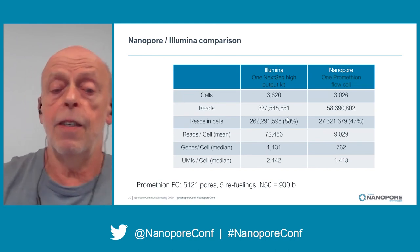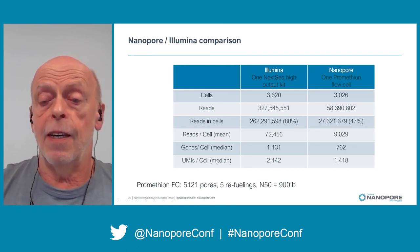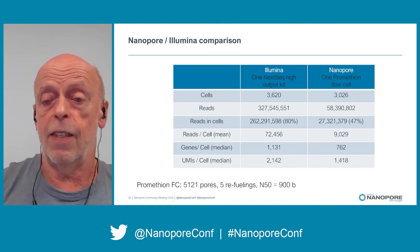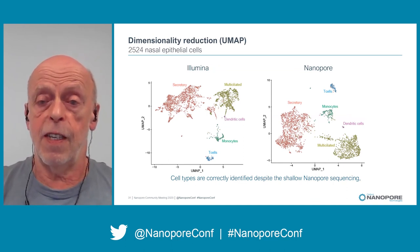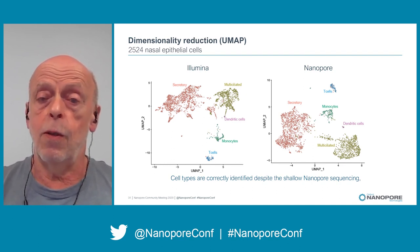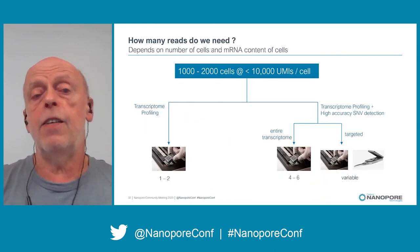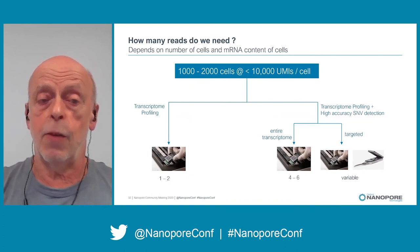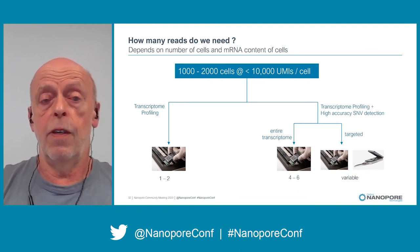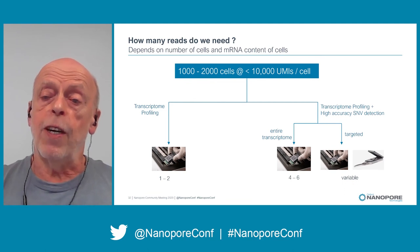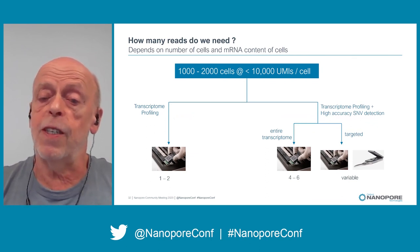But despite this shallow sequencing — we used just one PromethION flow cell, and not an optimal one — nanopore sequencing correctly identifies the cell types in the sample. The clustering looks rather similar to the one obtained with high-depth Illumina data. For single-cell transcriptome sequencing with nanopore alone: if you just do transcriptome profiling, one to two flow cells should be enough for one to two thousand cells. If you want to call SNVs and sequence each UMI several times, you need higher depth — four to six flow cells. Alternatively, do shallow sequencing for transcriptome profiling and add targeted sequencing for genes of interest.